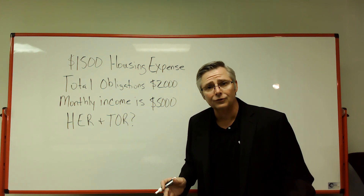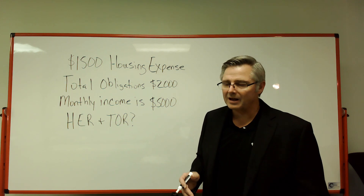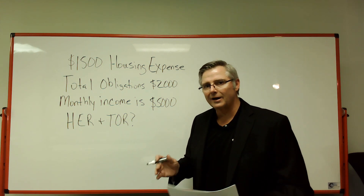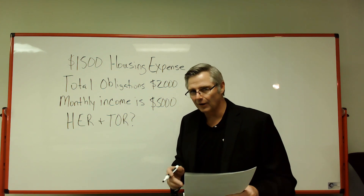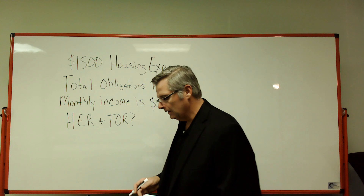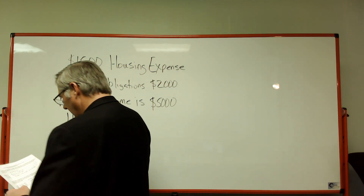Whenever they're asking for a ratio on something, you're going to do a division — you just have to make sure you divide the right numbers. So the first one we're going to get is the HE, the housing expense ratio.